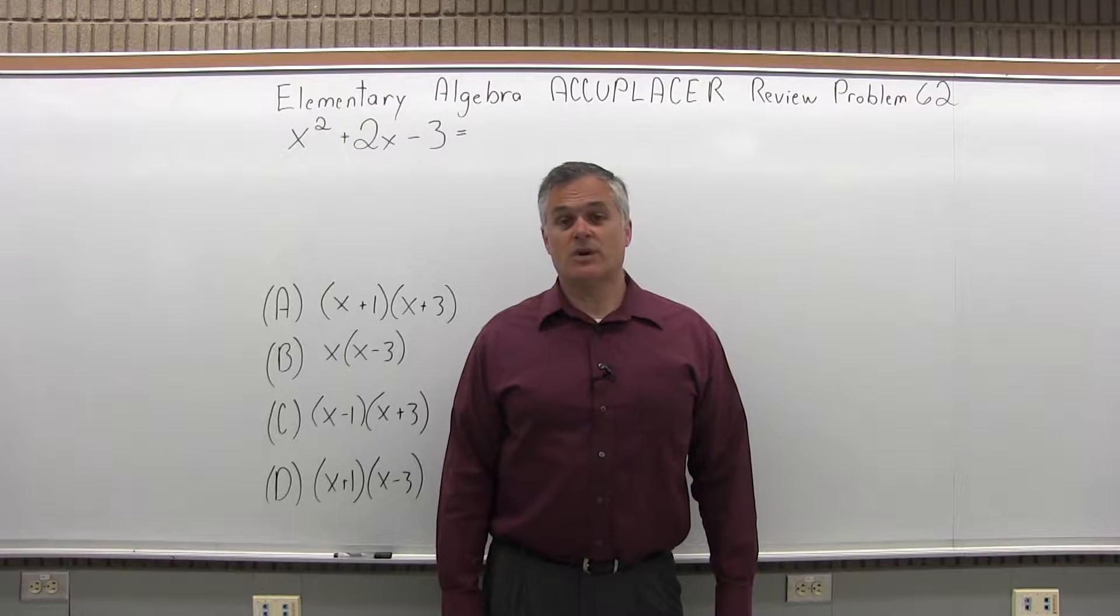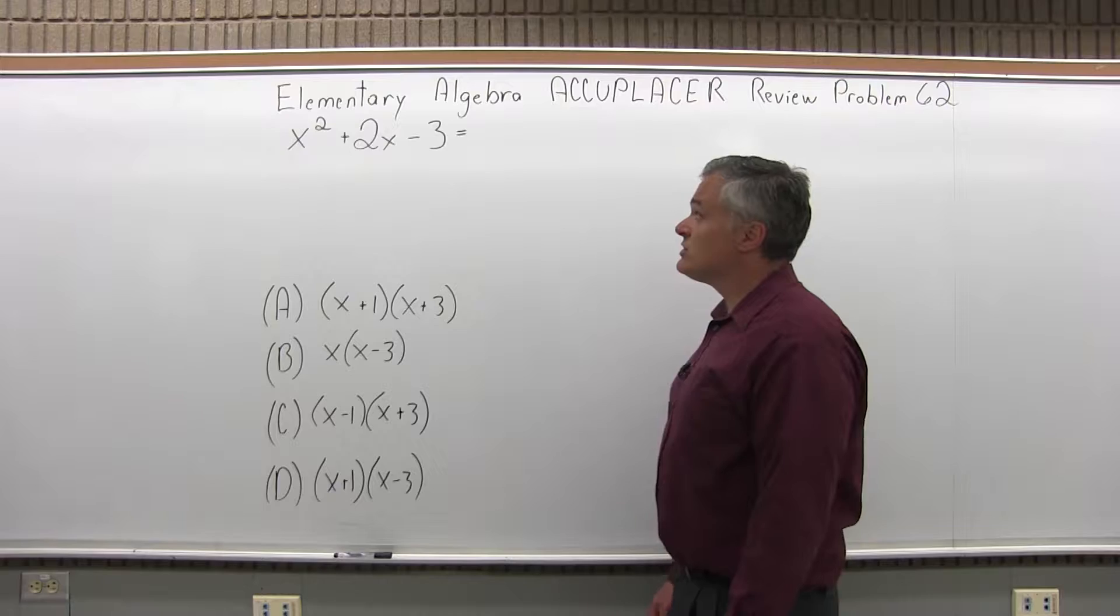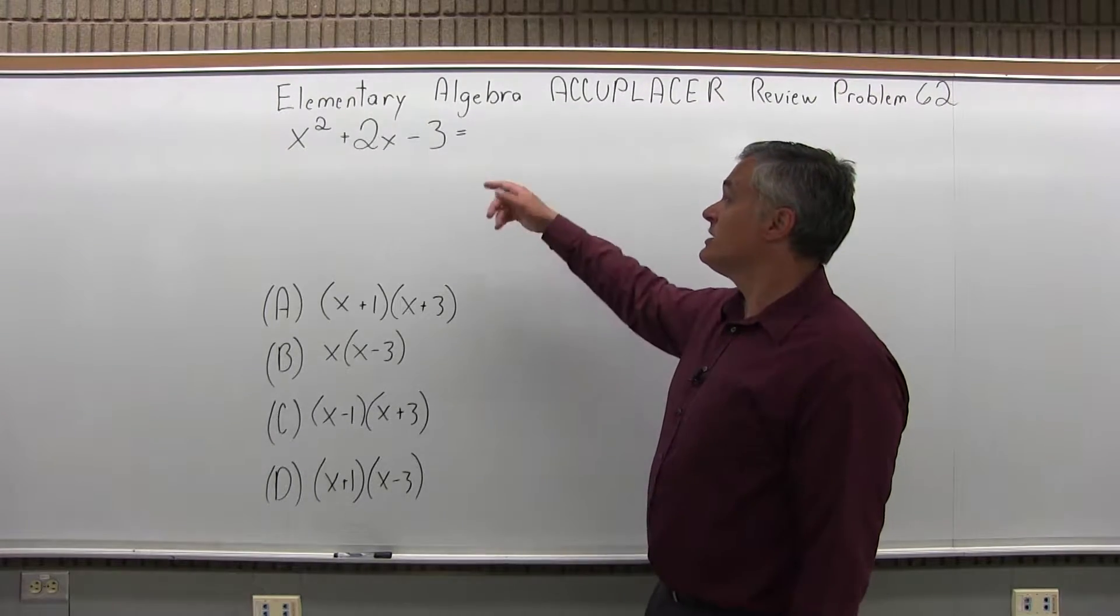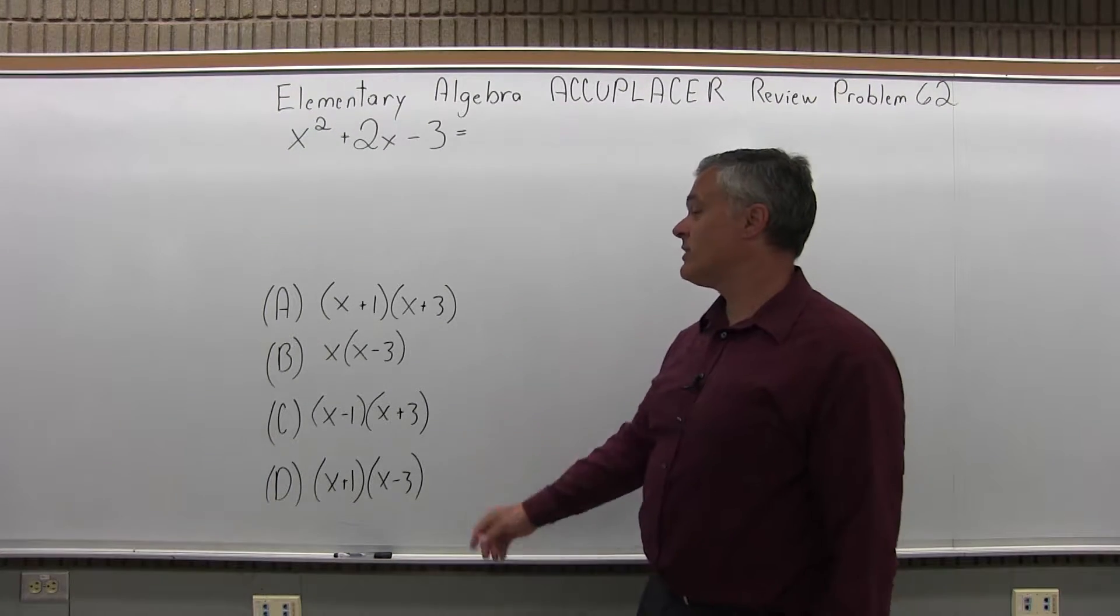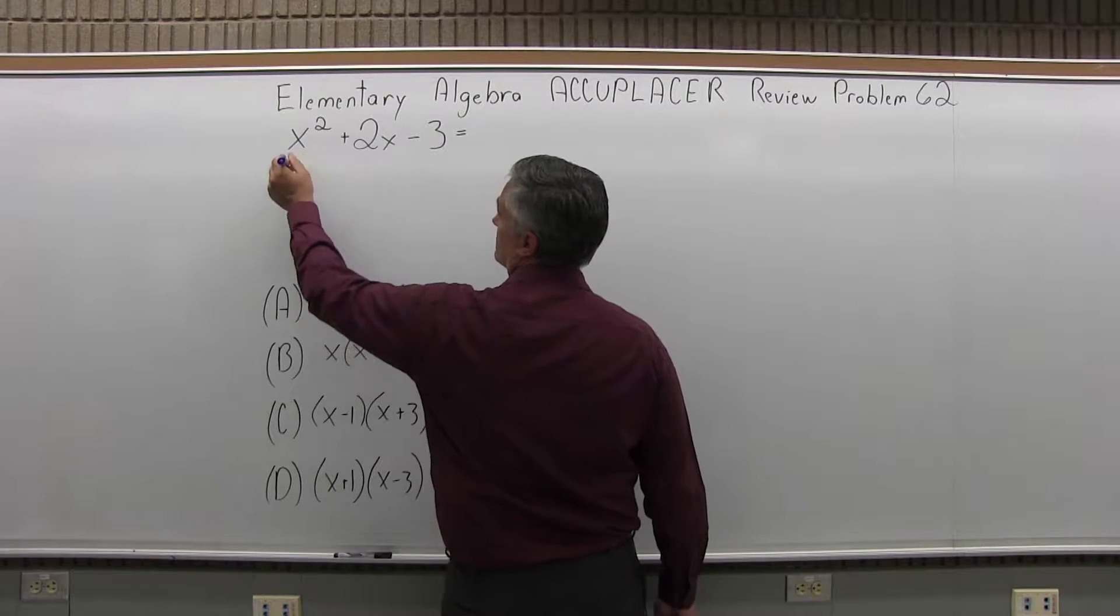This is the Elementary Algebra Accuplacer Review, Problem 62. We have x squared plus 2x minus 3 equals which one of the given four options? Now they want you to factor this, break it up into parentheses.